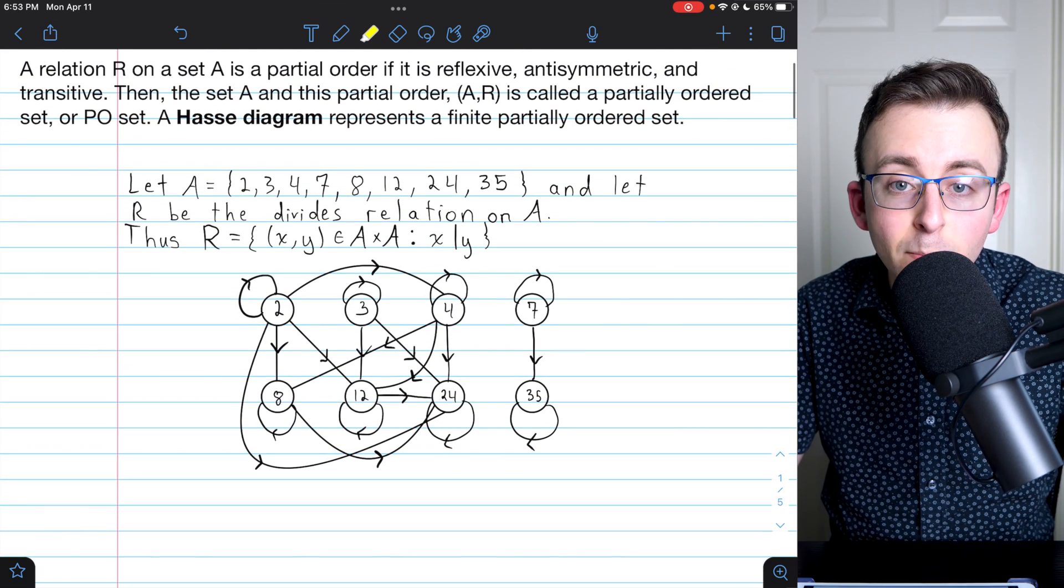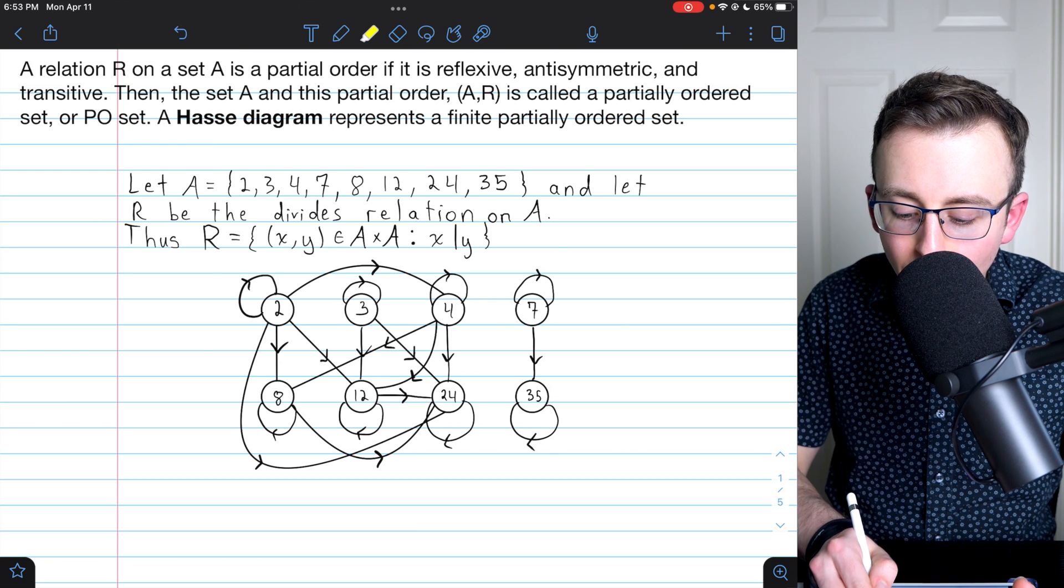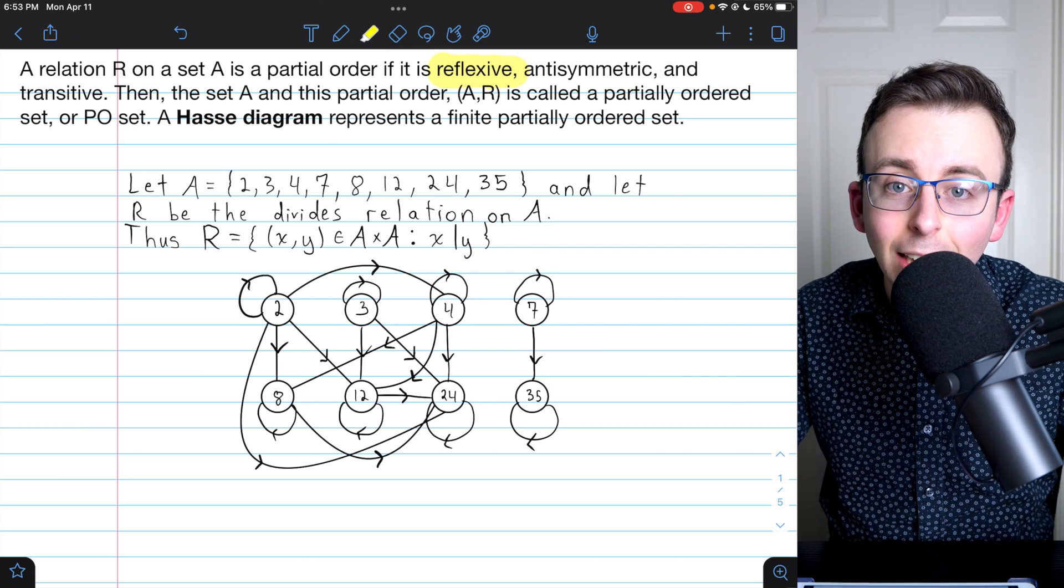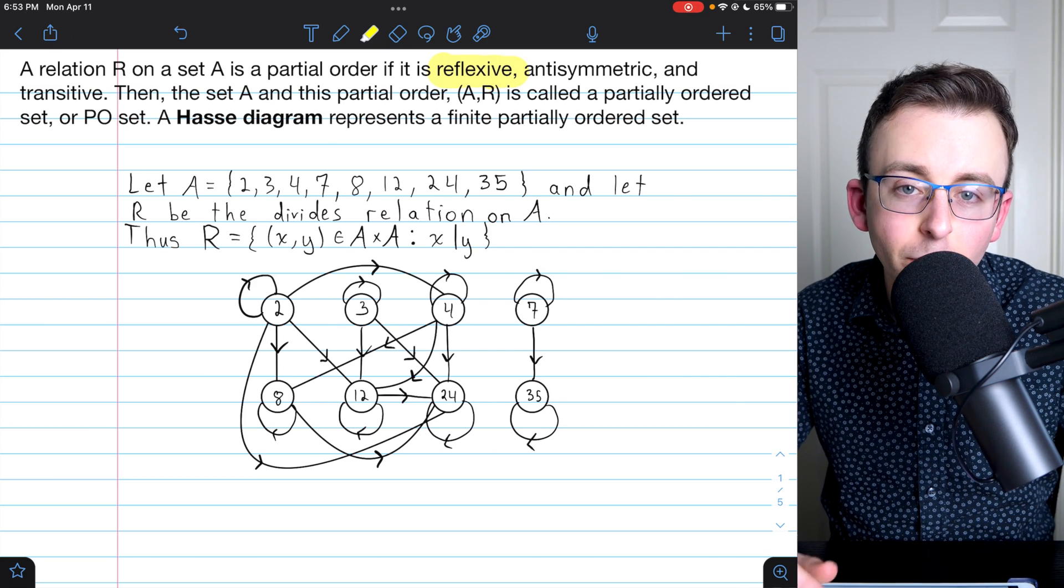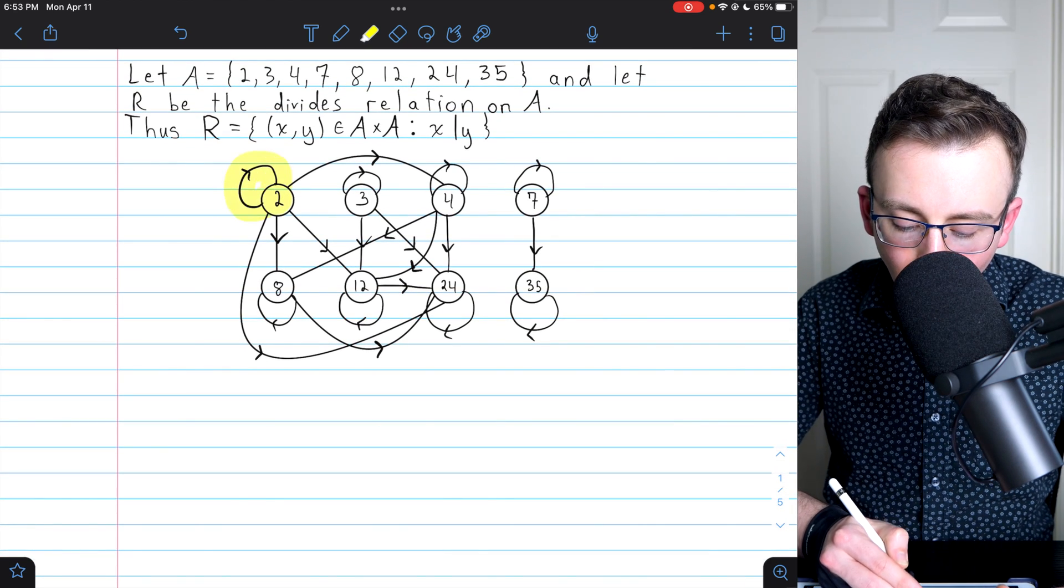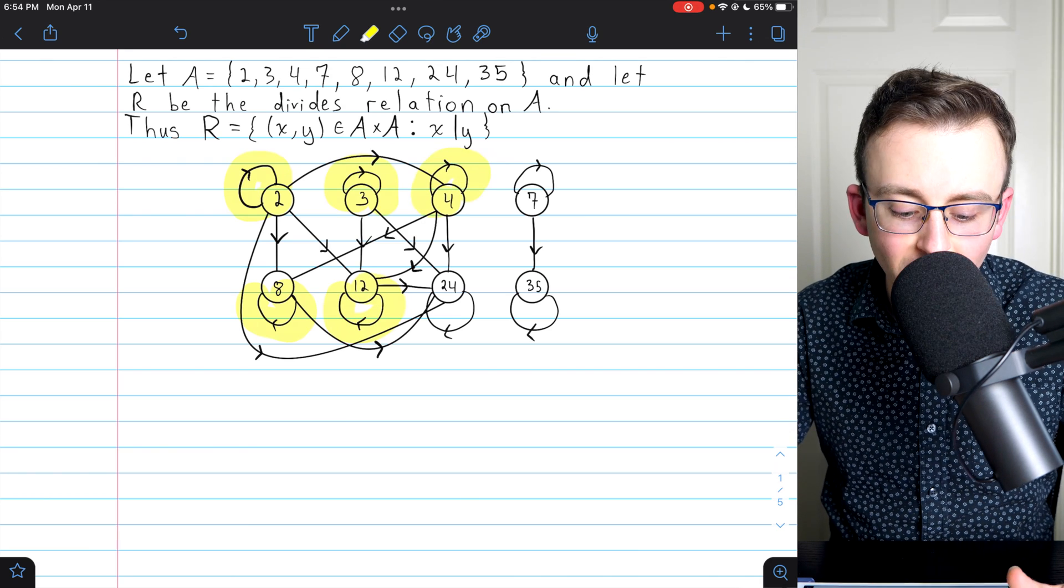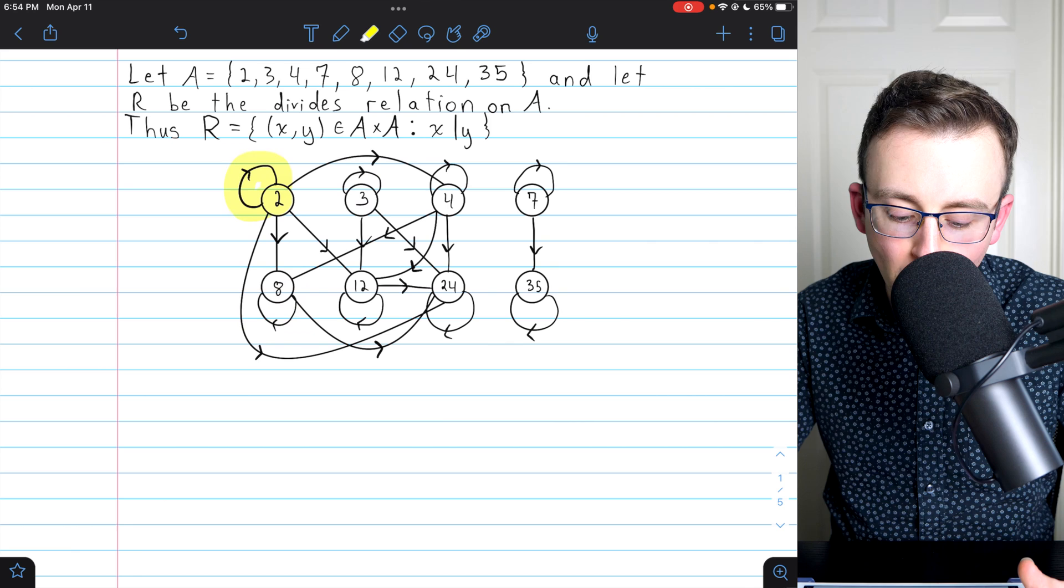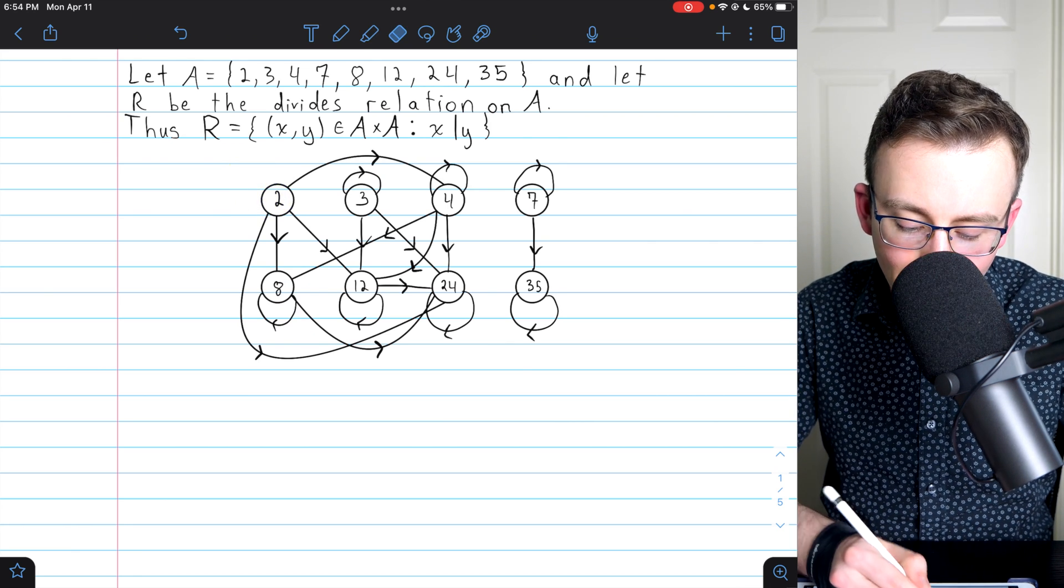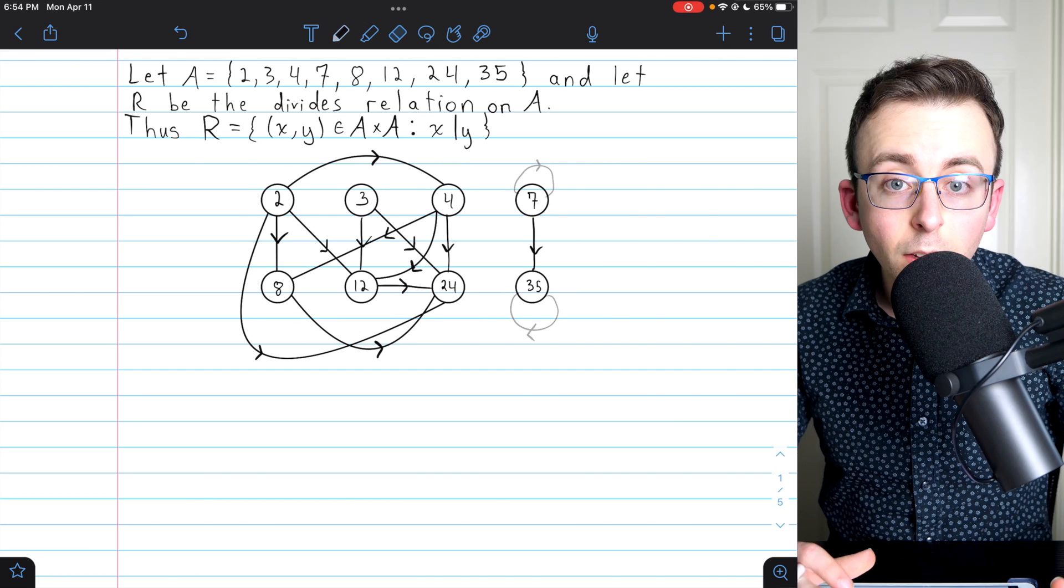We know that a Hasse diagram represents partially ordered sets, and partially ordered sets are reflexive. So I know that every element has to relate to itself. Otherwise, this wouldn't be a partially ordered set. So having all these loops on the vertices is really not necessary. I know that every element relates to itself. I don't need an arrow drawn there to remind me. So our first step to make this a Hasse diagram is get rid of all the loops on the vertices. We've done that.